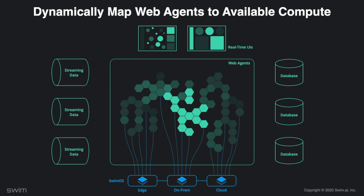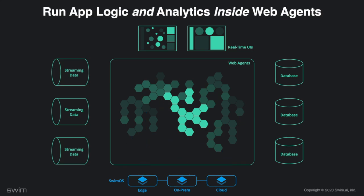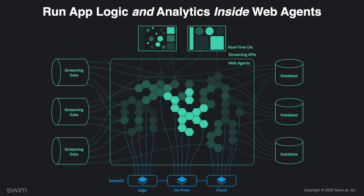The key to making a stateful worldwide web work is the Swim platform's runtime, which dynamically maps these stateful web agents to available compute. Rather than an architect deciding ahead of time which machines run a database, a message broker, or an application feature, you create web agents logically and the Swim OS — like an operating system — dynamically juggles all these web agent processes. Whether in the cloud, on-prem, or on the network edge, the Swim OS stitches all allocated compute into a uniform fabric and dynamically maps web agents to the most appropriate place to execute their logic.